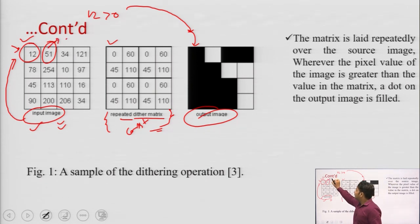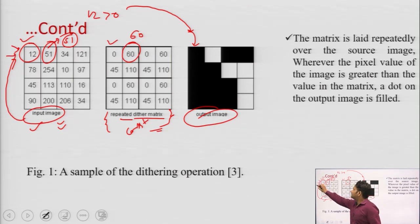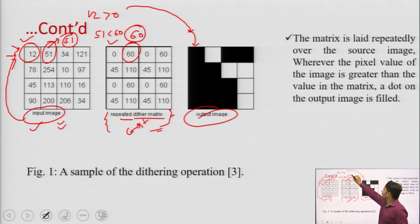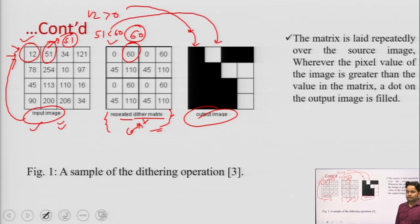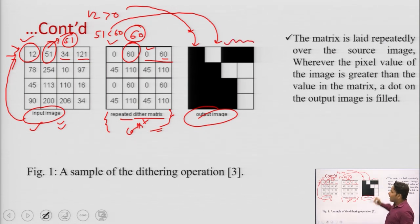This pixel has the value 51, and the dithering matrix is loaded with the value 60 at the corresponding position — the first row and second column. So it has the value 60. Comparing both values, 51 is lesser than 60, so it will reflect white. Remaining values: 34 is greater than 0, and 121 is greater than 60. So all these values greater than 60 are giving the black portion.